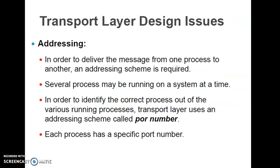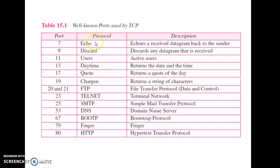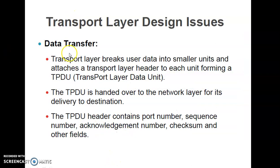For addressing, to deliver a message from one process to another, an addressing scheme is required. Several processes may be running on a system at a time. To identify the correct process, the transport layer uses an addressing scheme called port numbers. Port numbers are 16 bits long and are assigned to different processes running in a computer. One should remember at least three to four well-known port numbers used by TCP.